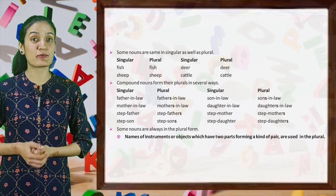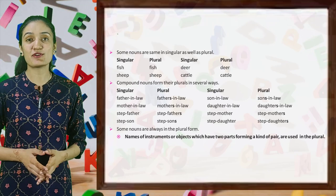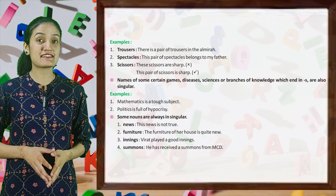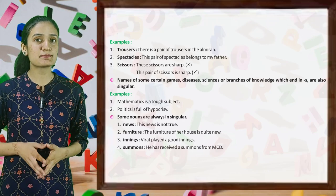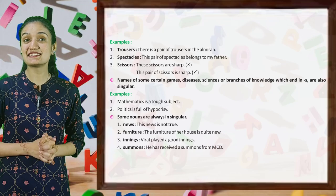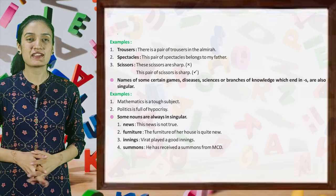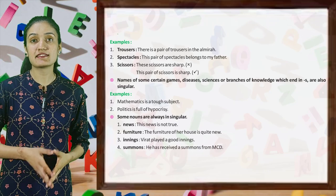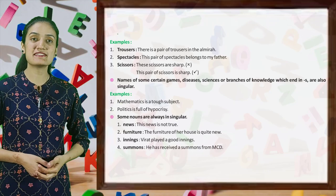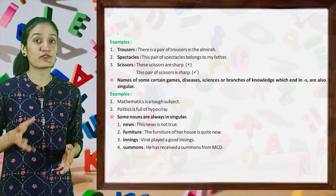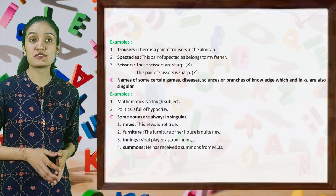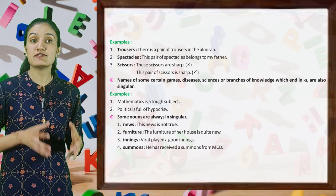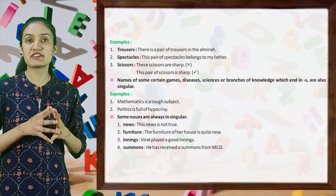Some nouns are always in the plural form. Names of instruments or objects which have two parts forming a kind of pair are used in the plural: trousers — there is a pair of trousers in the almirah; spectacles — this pair of spectacles belongs to my father; scissors — these scissors are sharp / this pair of scissors is sharp. Names of certain games, dishes, sciences or branches of knowledge which end in S are also singular: mathematics is a tough subject, politics is full of hypocrisy. Some nouns are always in singular: news — this news is not true; furniture — the furniture of her house is quite new; innings — Virat played a good innings; summons — he has received a summons from MCD.